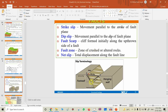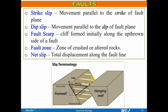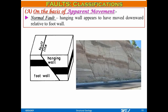To summarize: foot wall means the block on which another block is resting. Hanging wall means the block that is hanging above. Dip slip means the block moved from here to there along the dip direction; strike slip means movement along the strike. Net slip is the total displacement from vector addition. The total displacement along the fault line is called net slip. Now let's talk about fault classification.